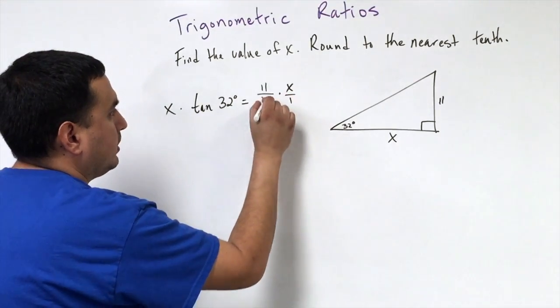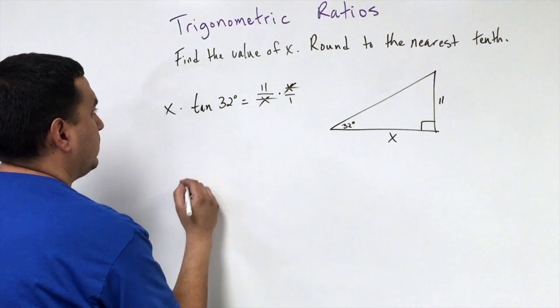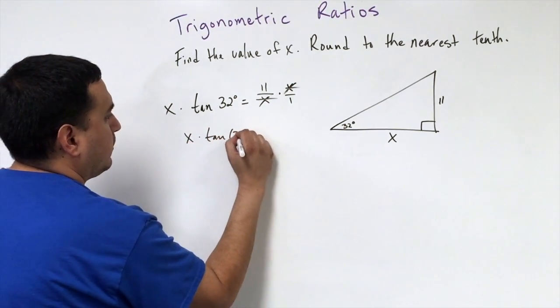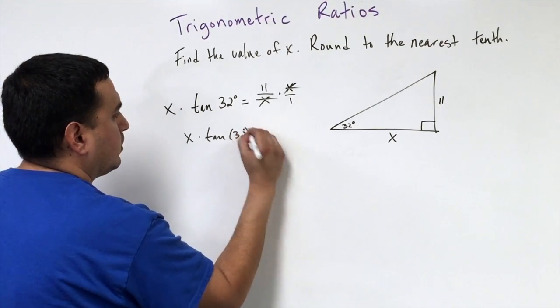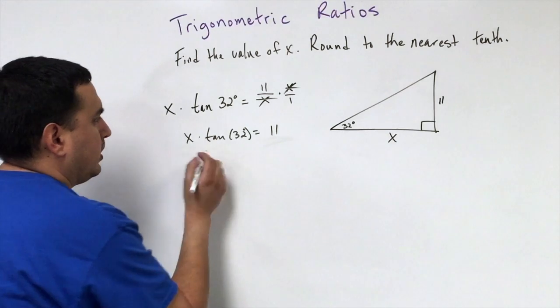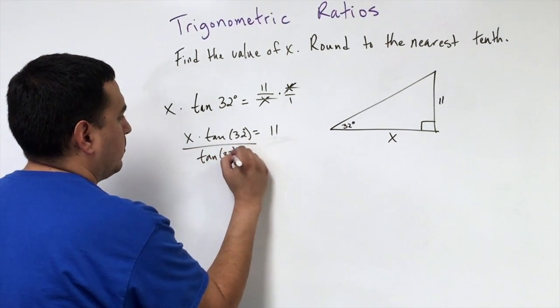This would be x over 1, so I can factor out those two x's that will turn into one. Then we have x times the tangent of 32 degrees equals 11. So then we would divide by the tangent of 32 degrees.